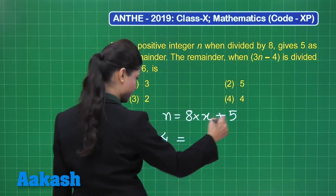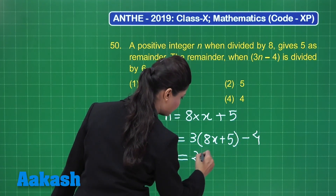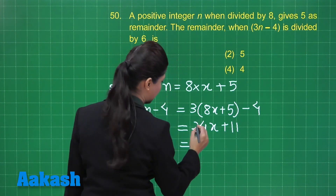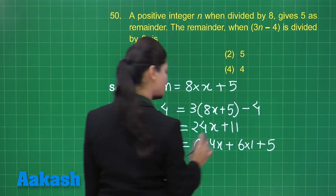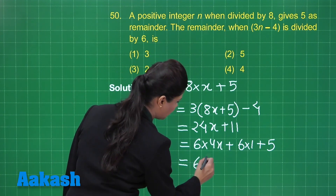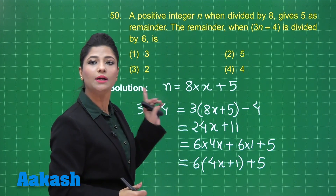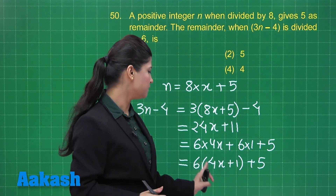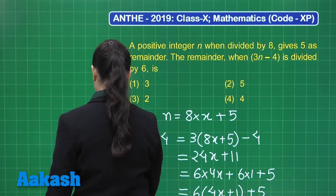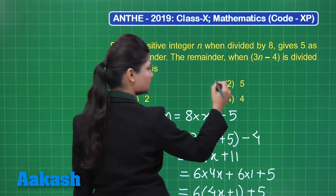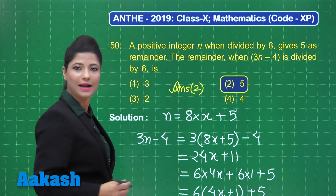We need the remainder when 3n − 4 is divided by 6. Substituting n = 8x + 5: 3(8x + 5) − 4 = 24x + 11. Dividing by 6: 24x + 11 = 6(4x + 1) + 5. Taking 6 common gives quotient 4x + 1 and remainder 5. So when 3n − 4 is divided by 6, the remainder is 5 — option number 2.